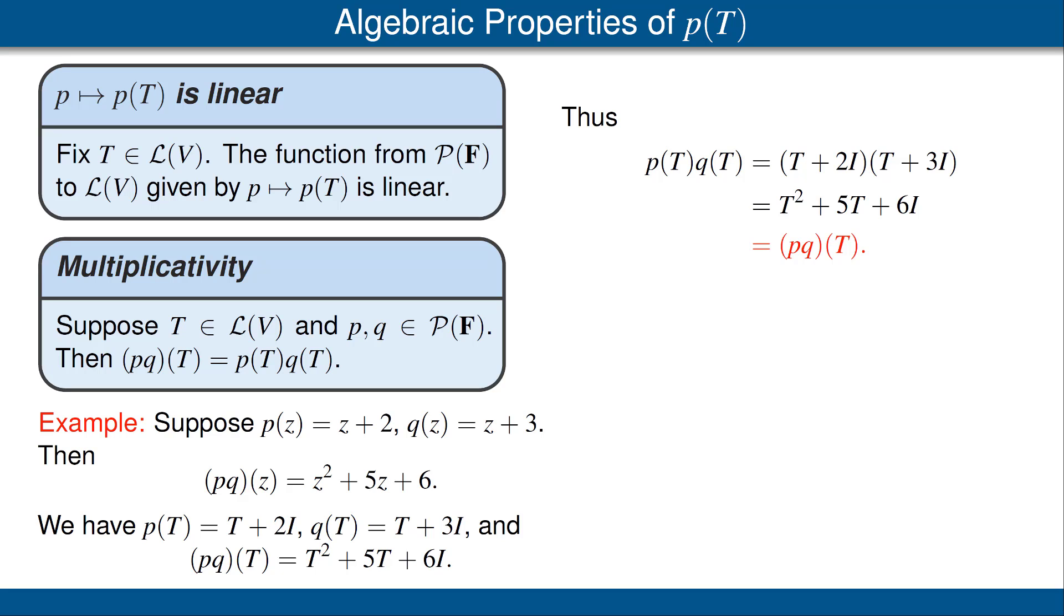But this case enables you to see why it's true in general. When we multiply the polynomial p times the polynomial q, we're just using the distributive property. And we do the same thing when we're multiplying p of T times q of T. In this case, T plus 2I times T plus 3I. The procedure for multiplying that and finding that product, just the distributive property, same as done with the polynomial. That's the reason that pq of T equals p of T times q of T.